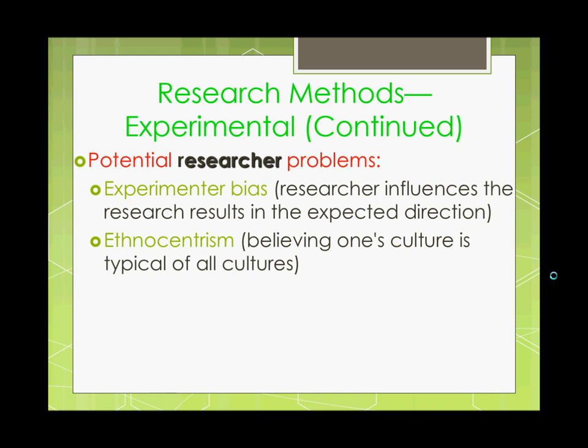We have some issues when it comes to experimental research. There are some potential researcher problems in that the experimenter could have their own bias. When they're looking for a particular result, they have all this money coming in, all this pressure — they're bringing in grad students and undergrad students, all working towards this goal. They need to be able to show that something came of this, that they're influencing the research results in the direction they want it to go, so they can say yes, does A cause B? It can be very tempting for some experimenters, as there could be any number of pressures both internally and externally on the experimenter who's designing the study.